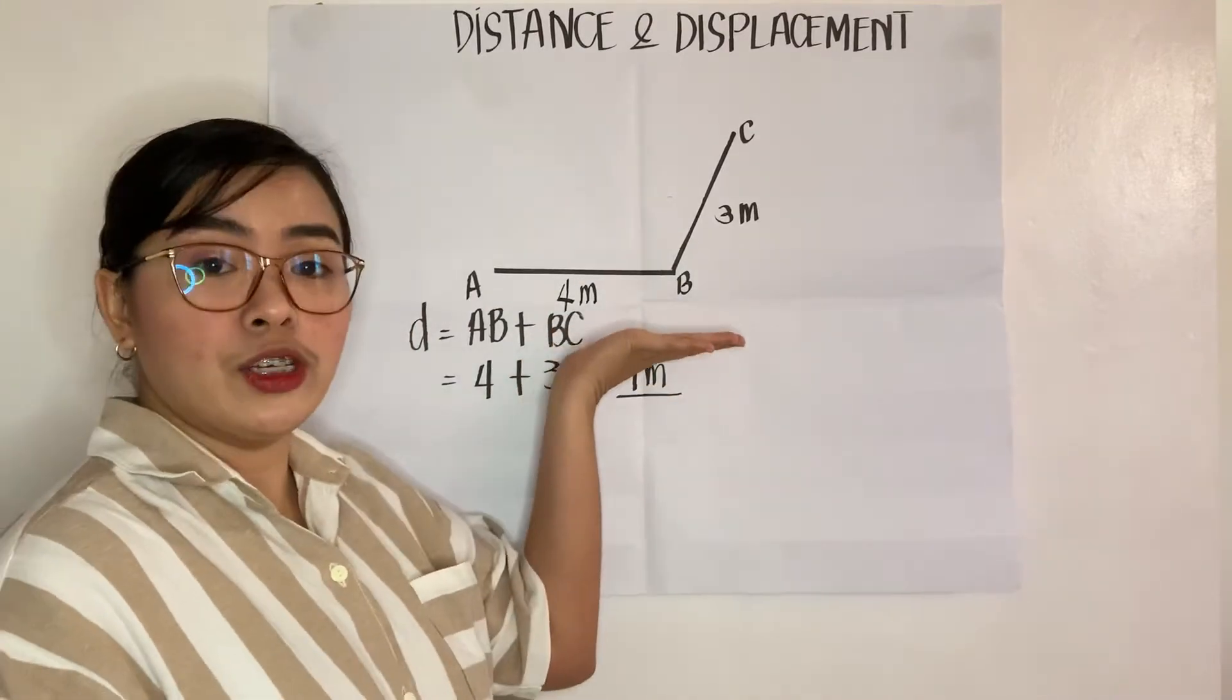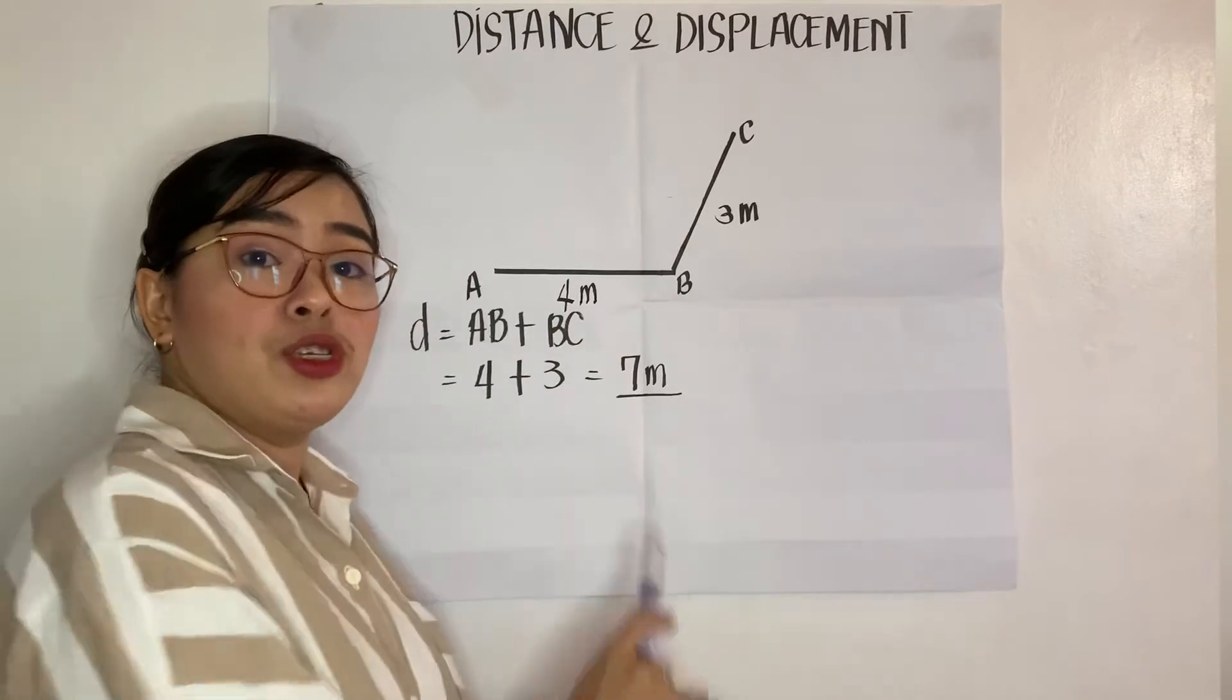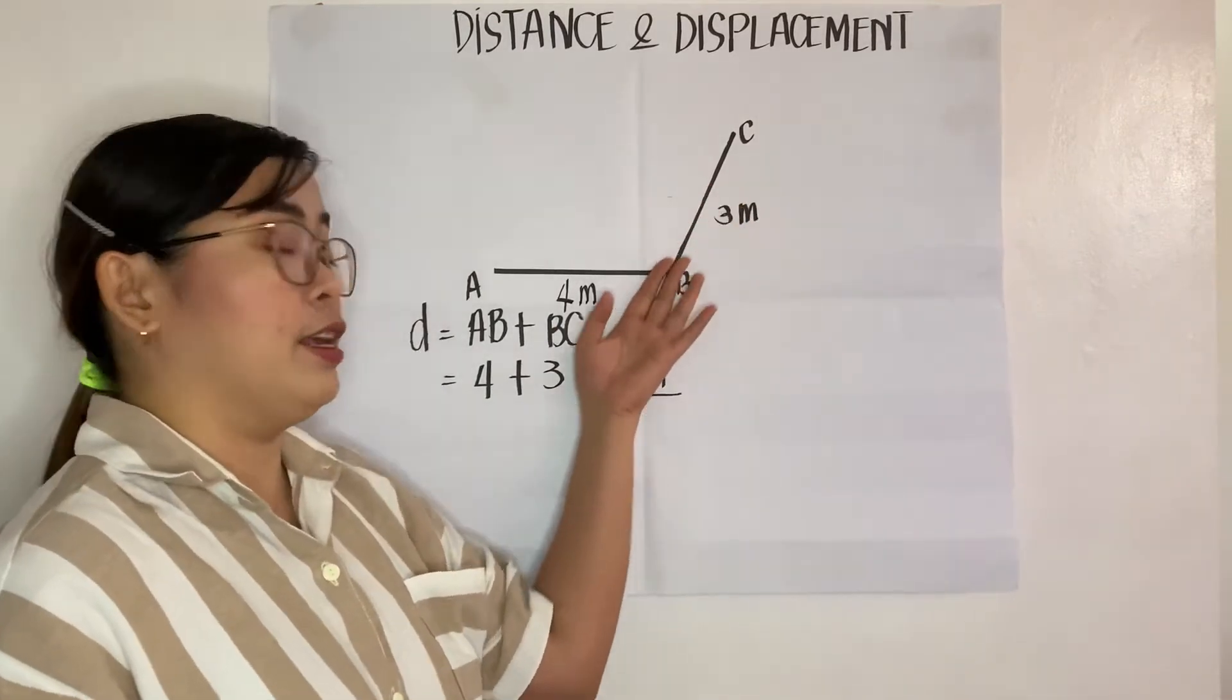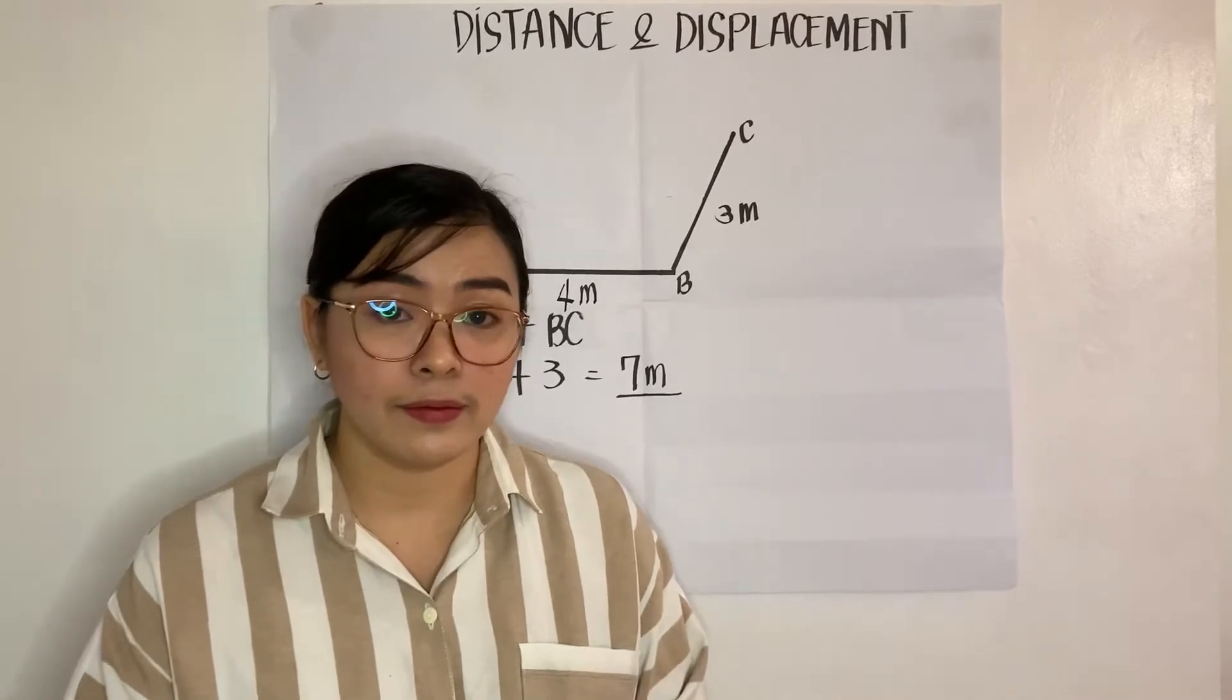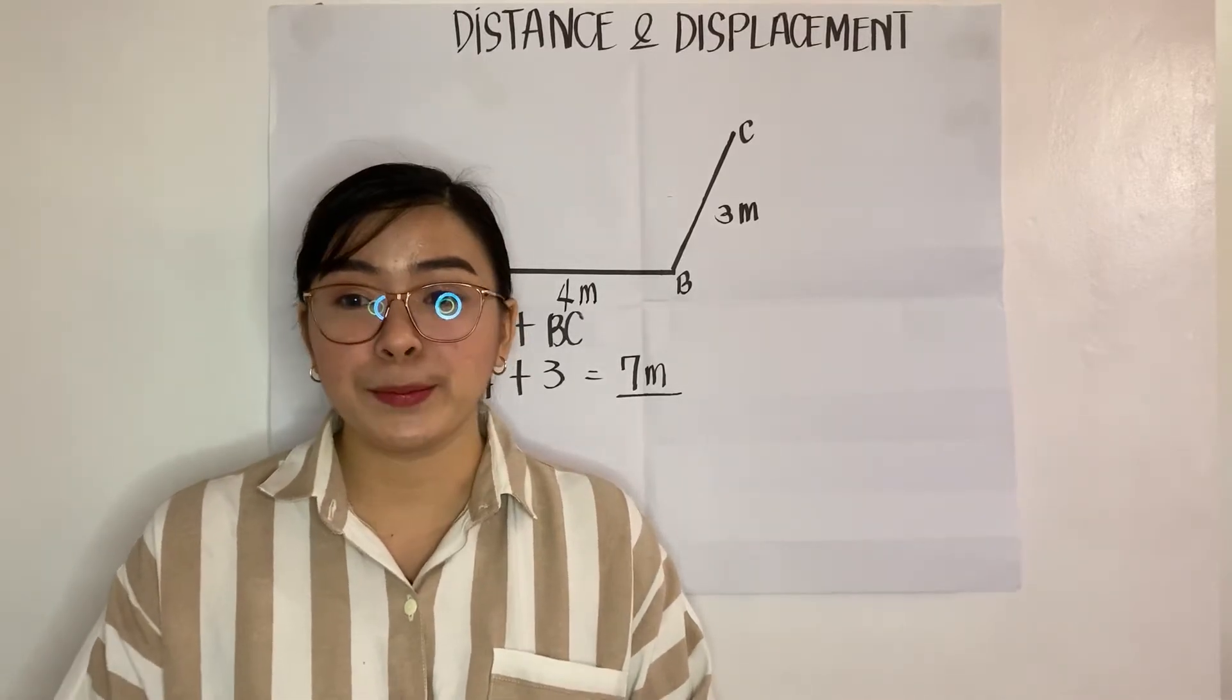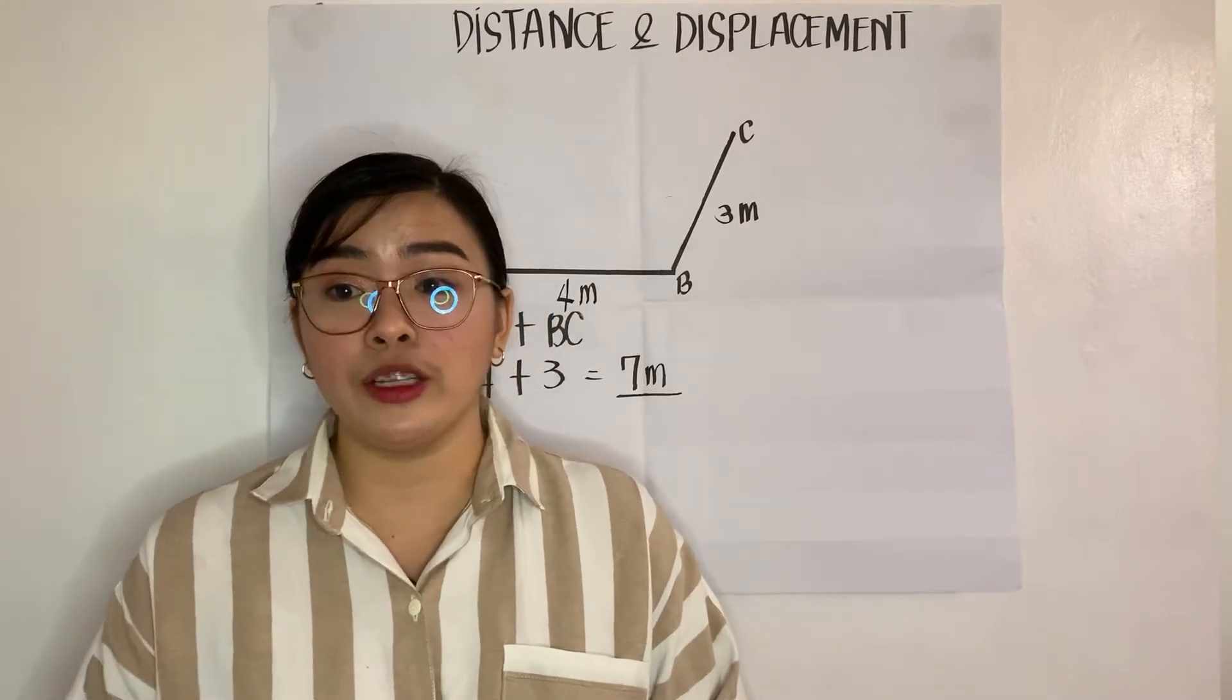So, this is your direction. And your initial position is point A. And your last position will be point C. Other definition for displacement? Yes, please. Okay. Displacement is a vector quantity.